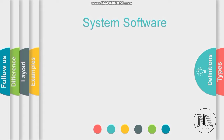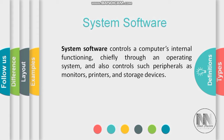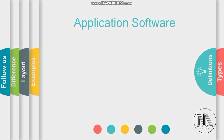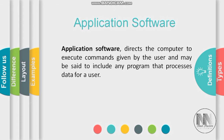System software refers to software that controls a computer's internal functioning, chiefly through an operating system. It also controls peripherals such as monitors, printers, and storage devices attached to a computer system. All these computer hardware components are controlled by system software.